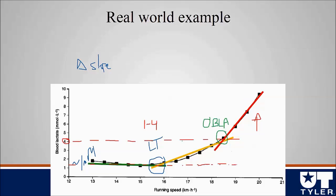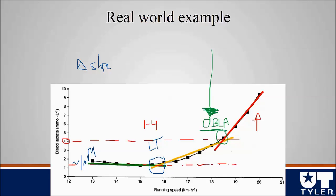Most people use these terms interchangeably or show only one inflection point, but it's well established in the lactate literature that there are actually two distinct points. The first is a small change in slope where lactate starts to increase — that's lactate threshold. The second is the rapid rise — that's OBLA. When we talk about fatigue, OBLA is the point we care about, not lactate threshold. This is why people get confused when they hear that lactate threshold causes fatigue — realistically, the critical point is OBLA.